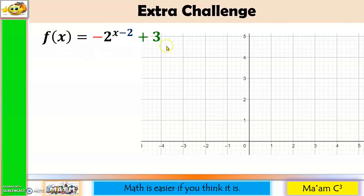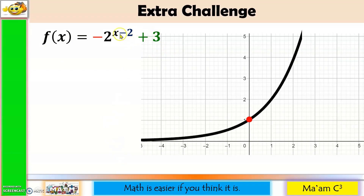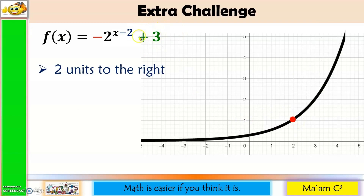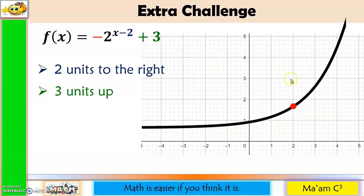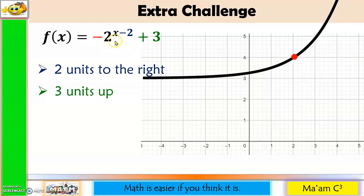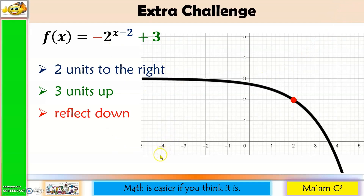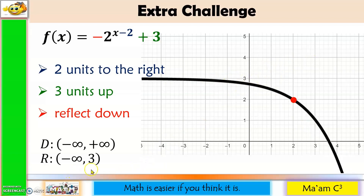Let's do an extra challenge with combinations of the transformations we discussed. My mother function is f of x equals 2 raised to x. Because of negative 2 in the exponent, my graph will move 2 units to the right. Because of positive 3, my graph will move 3 units up. And because of the negative in front, my graph will reflect down. Now let us determine the domain and range. The domain is negative infinity to positive infinity. For the range, it started at negative infinity up to positive 3, but 3 is not included. So the range is negative infinity to positive 3.